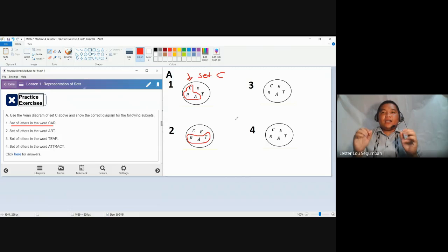If there are Venn diagrams which are connected, meaning they are sets which has common elements. It's already in your module. So just read it. Number three, set of letters in the word tear, T-E-A-R. So you have T-E-A and R. Let's enclose it better.